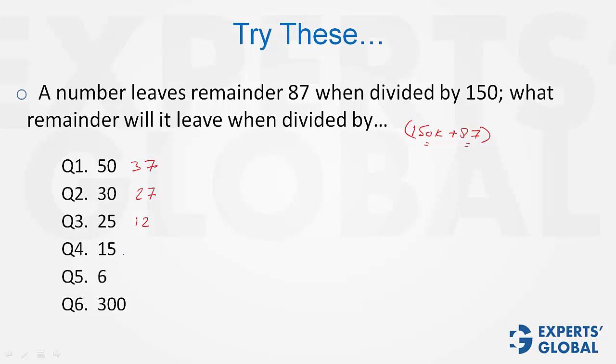With 15, 150K will give 0, 87 will also give 12. So the answer is 12. With 6, 150K will give 0, 87 will give 3. So the answer is 3.